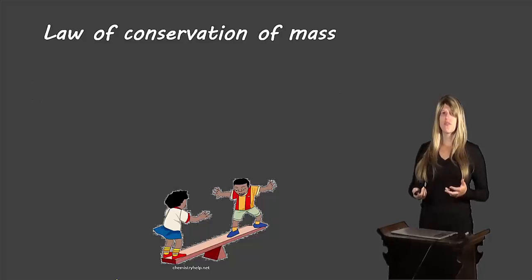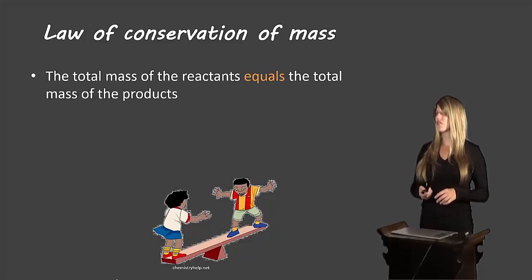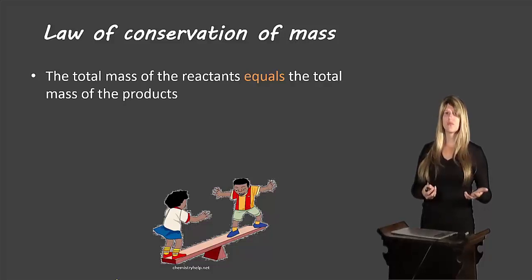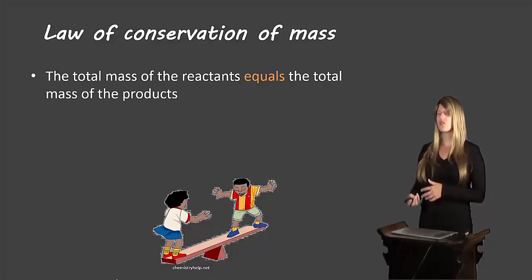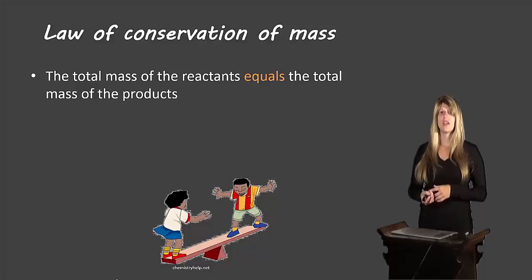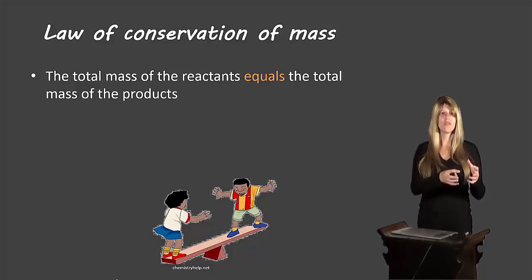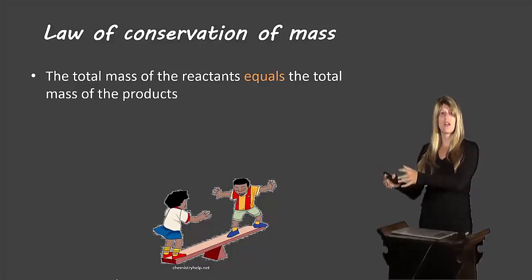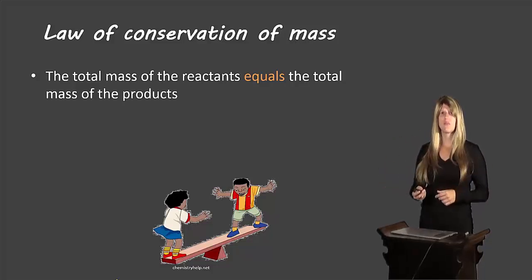So let's start off with the law of conservation of mass. The actual law is that the total mass of the reactants equals the total mass of the products. If we took a reaction and weighed all of our chemical reactants, did the reaction, and then weighed our products, we would get the same number.